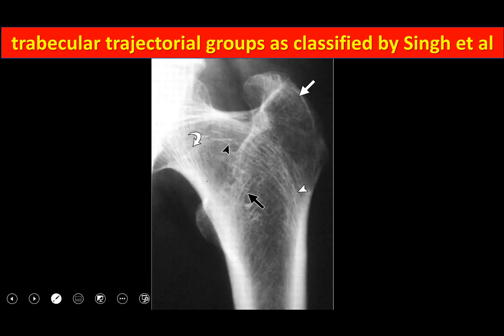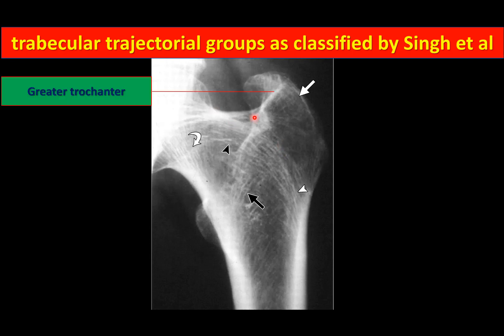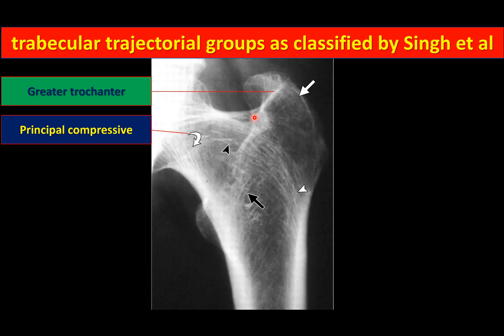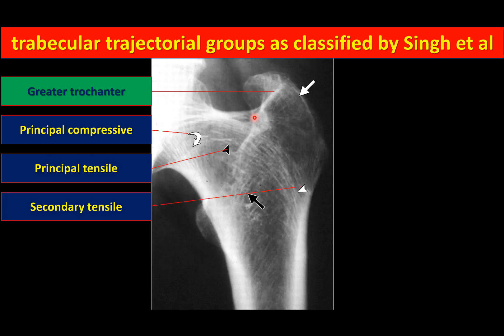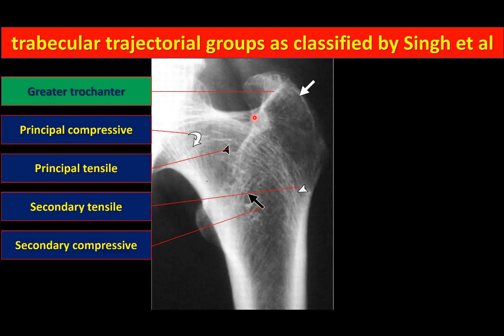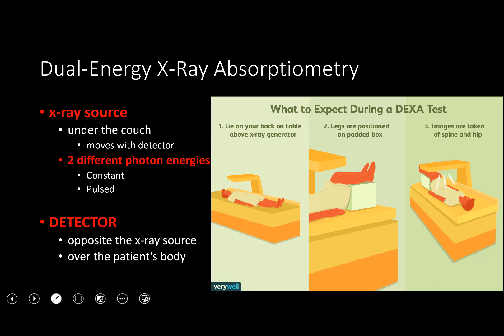In the peripheral skeleton, particularly the proximal femur, osteoporotic bone appears blacker on imaging. The trabecular lines become more prominent and visible — including the greater trochanter lines, principal compressive lines, principal tensile lines, secondary tensile lines, and secondary compressive lines. Normally these lines are obscured by dense calcification, but in osteoporosis they become clearly visible.